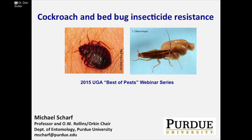He teaches a course in insect toxicology at Purdue. Mike received his BS, MS, and PhD degrees from Purdue in 1991, 1993, and 1997. After that, he was a postdoctoral researcher at the University of Nebraska and then Cornell, and an assistant and associate professor at the University of Florida before joining Purdue in his current role. So welcome, Mike, the floor is now yours.